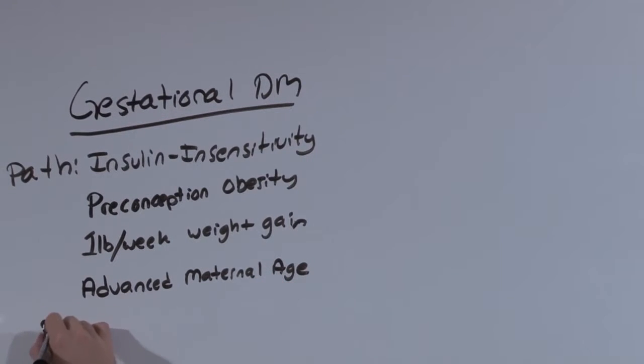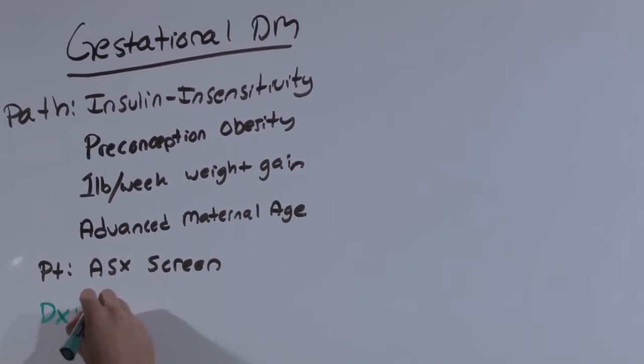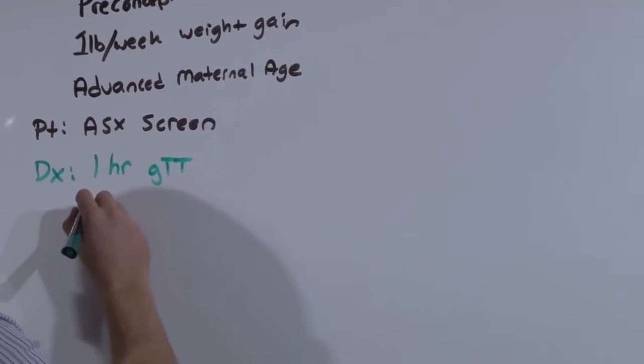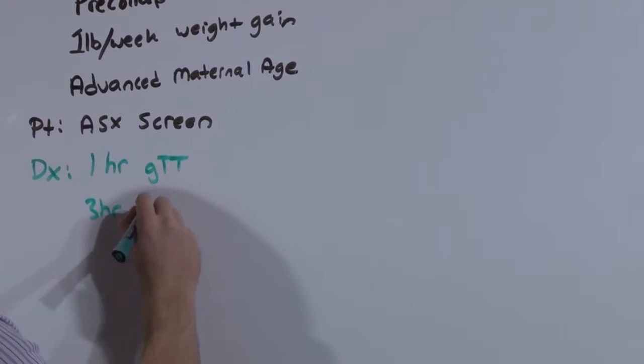And so mom may not experience anything. So you screen everybody. It's an asymptomatic screen. And the way you screen patients for gestational diabetes is with the one hour glucose tolerance test. And you confirm with the three hour glucose tolerance test.